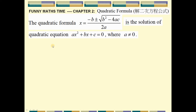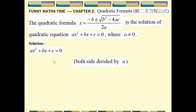First we prove the quadratic formula. We first divide this equation both sides by a. This gives us: first term equal to x squared, the second term is equal to b over a times x, and the last term is c over a equal to zero.